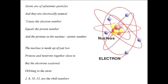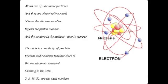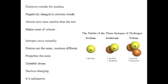But the electrons scattered, orbiting in the atom. Electrons outside the nucleus, negatively charged in electron clouds, almost zero mass, smaller than the rest, makes most of volume.